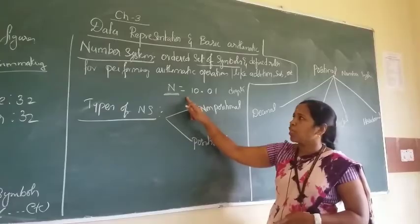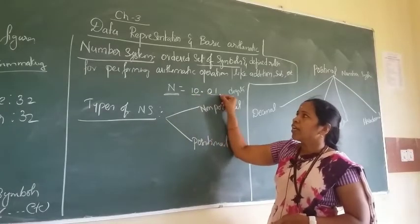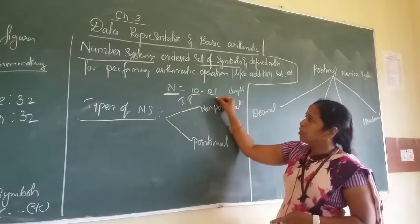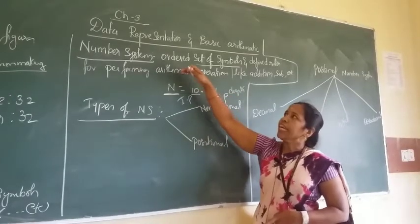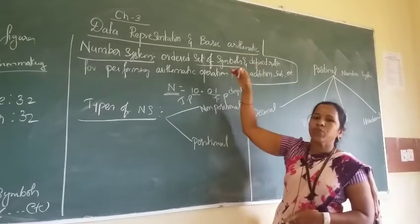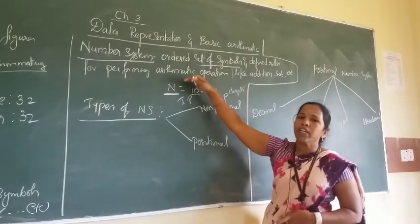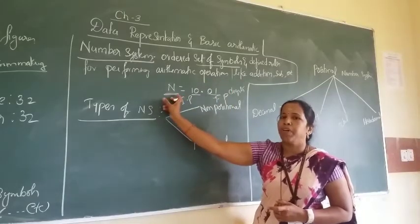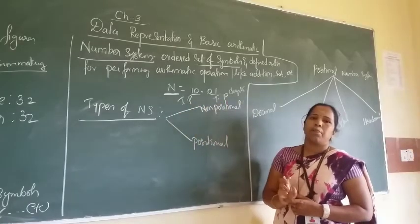For example, if I give a number 10.01, this number is divided into two parts. Before the decimal point it is considered the integer part, and after the decimal it is considered the fractional part. So a number system is an ordered set of symbols called digits with defined rules used for performing arithmetic operations, and the group of symbols is stored under a number having an integer part and a fractional part.